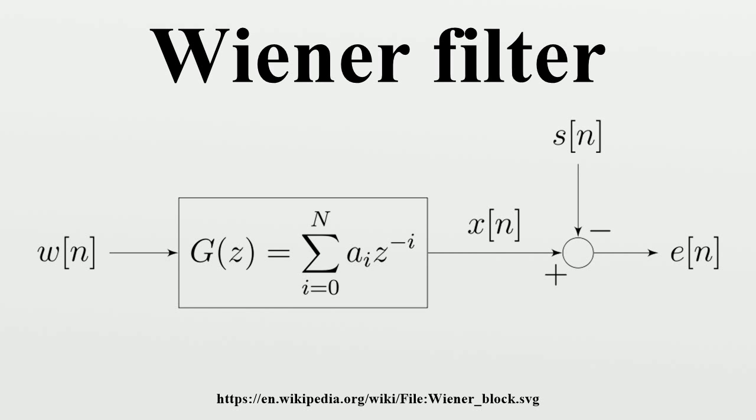the design of the Wiener filter takes a different approach. One is assumed to have knowledge of the spectral properties of the original signal and the noise, and one seeks the linear time-invariant filter whose output would come as close to the original signal as possible.